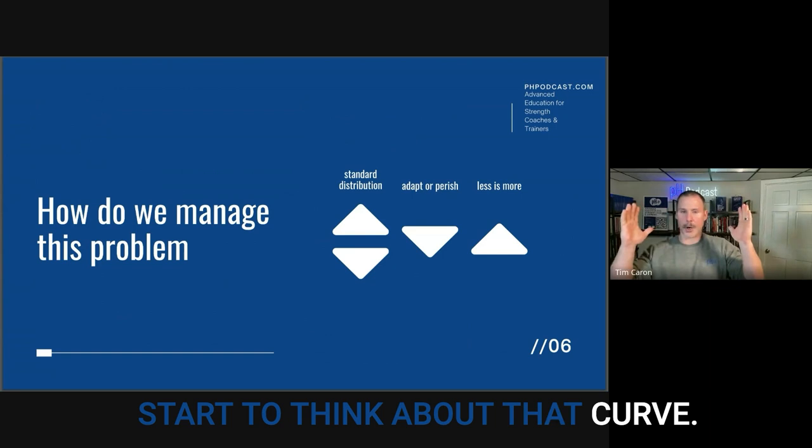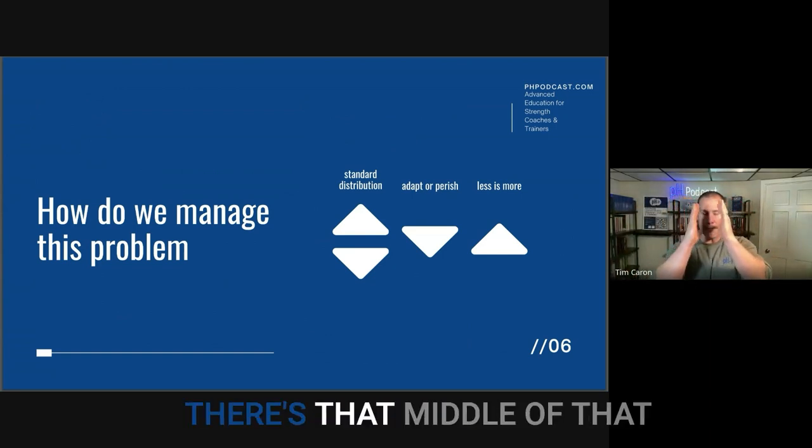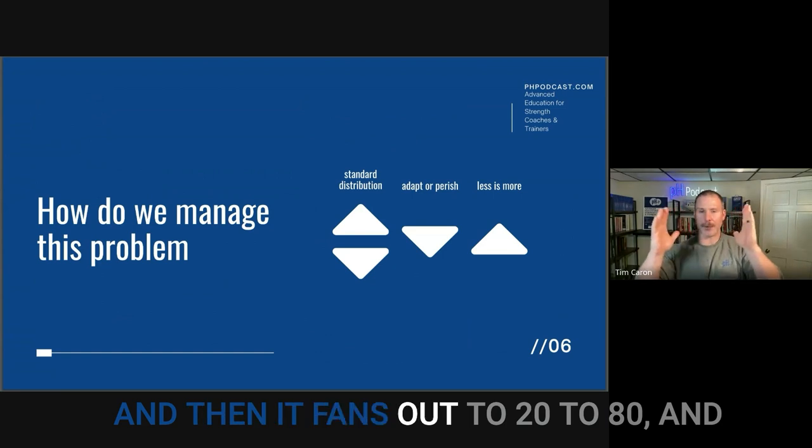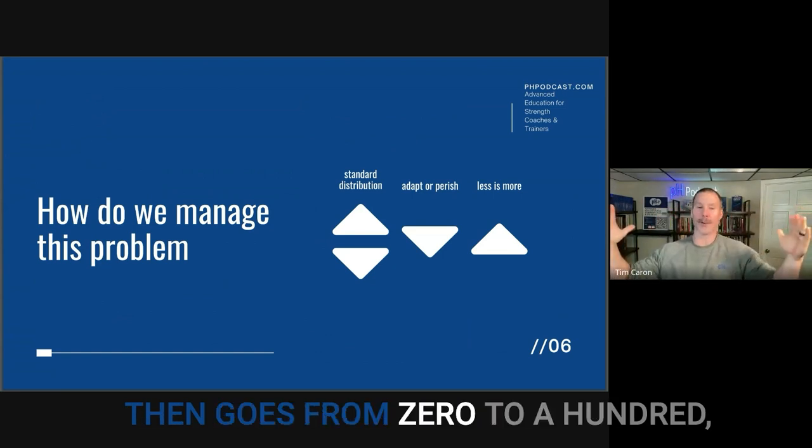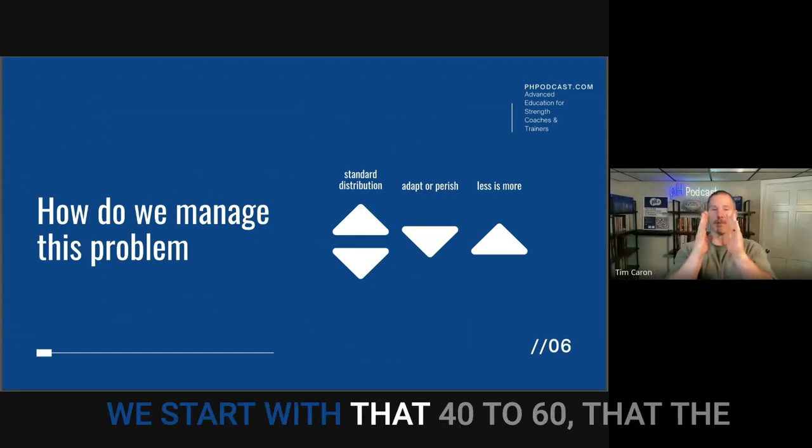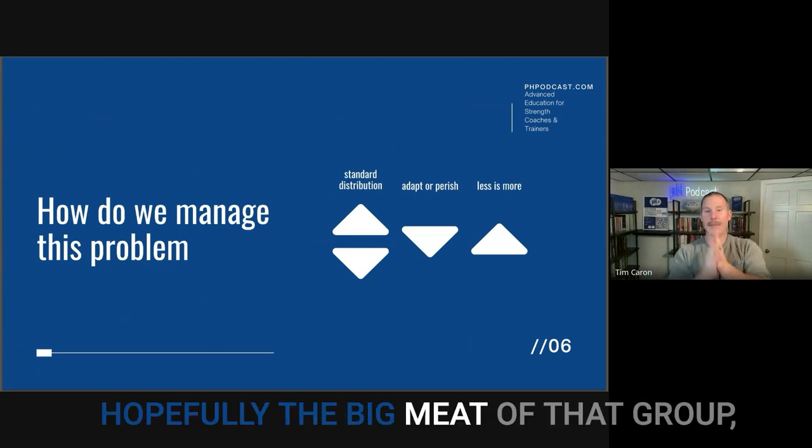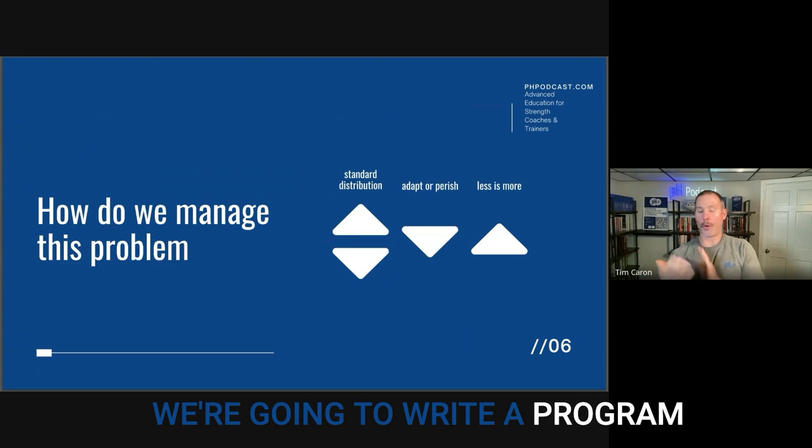And we start to think about that curve. We're trying to get in the middle of that. There's that middle of that distribution chart, that 40 to 60. And then it fans out to 20 to 80, and then goes from 0 to 100. We start with that 40 to 60. That's the middle of that distribution chart. Hopefully, the big meat of that group, we're going to write a program towards.